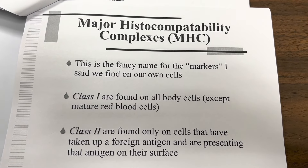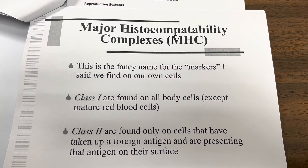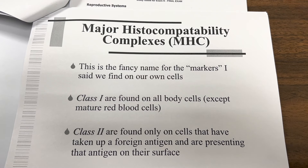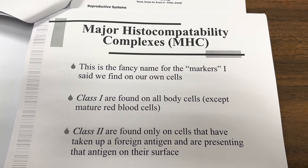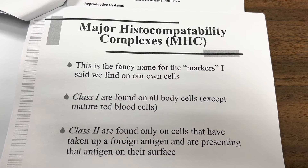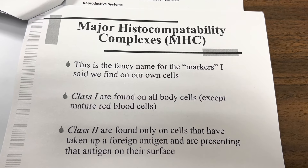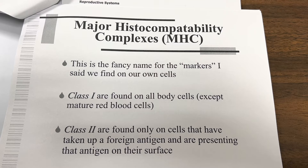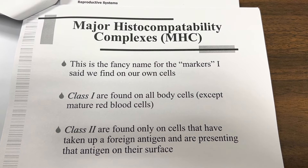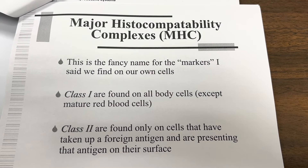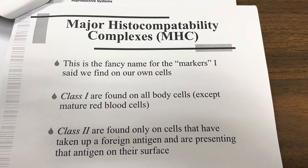Major Histocompatibility Complex, or MHC — this is a fancy name for the markers we find on our own cells. MHC class 1 are found on all body cells except mature red blood cells because they do not have a nucleus. MHC class 2 are found only on cells that have taken up a foreign antigen and are presenting that antigen on their surface.